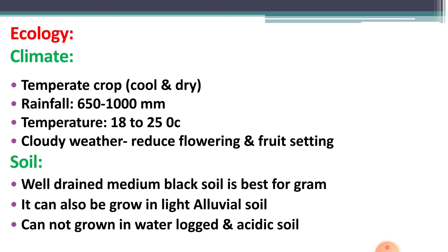Gram is a temperate crop — meaning it is sown in winter season and requires cool and dry climate. It grows in areas receiving 650 to 1000 mm rainfall per annum. The temperature ranging from 18 to 25 degrees Celsius is good for the better growth and development of the crop.